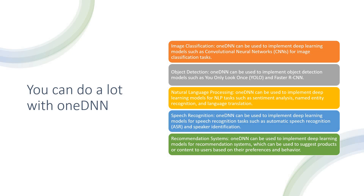What kind of applications can you build? Which domains can you go deeper with oneDNN? It has a plethora of options. The first one is image classification — you can use oneDNN for image classification applications with CNN. You can also go ahead with object detection; you can use YOLO, Faster RCNN, and implement object detection models. Natural language processing can also be tried, and oneDNN can be used to implement deep learning models for NLP tasks such as sentiment analysis, named entity recognition, and language translation.